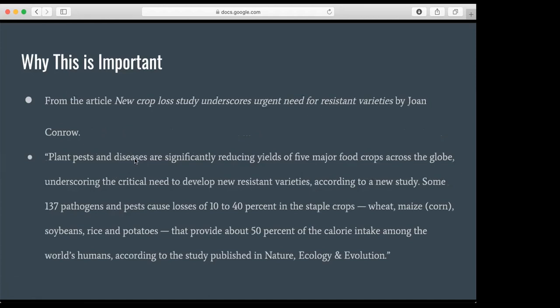This is from another article about plant loss. Plant pests and diseases are significantly reducing yields of five major food crops across the globe, underscoring the critical need to develop new resistant varieties. According to a new study, some 137 pathogens and pests cause losses of 10 to 40% in staple crops, wheat, maize, soybeans, rice, and potatoes that provide about 50% of the calorie intake among the world's humans.